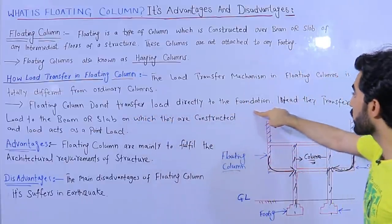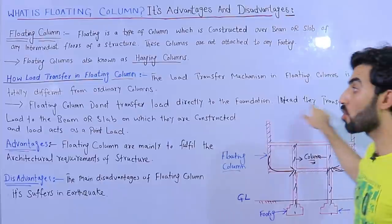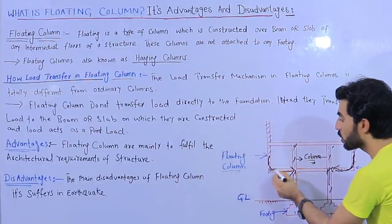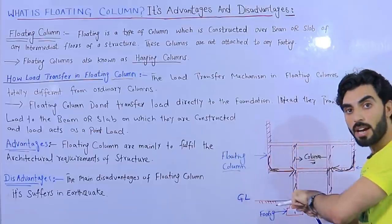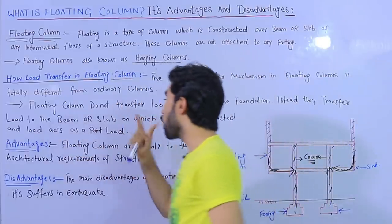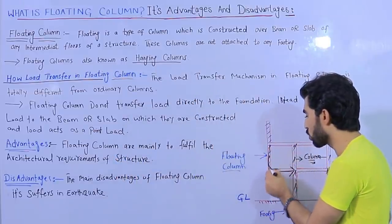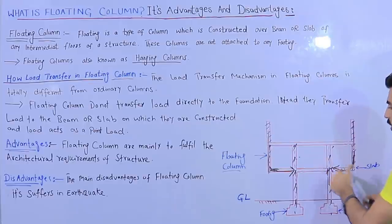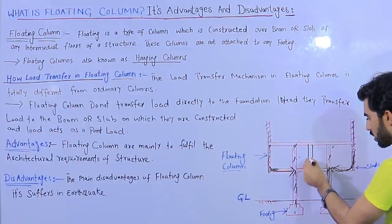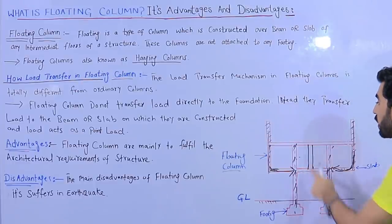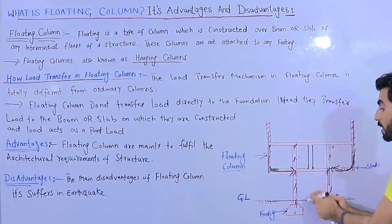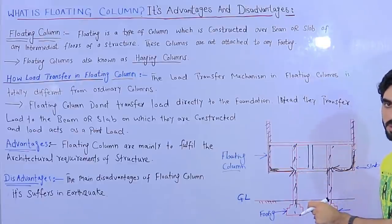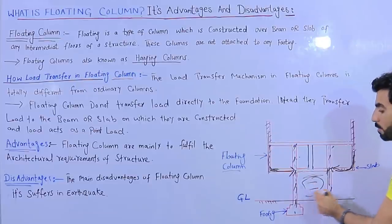The floating column does not transfer the load directly to the foundation. Instead, it transfers the load to the beam or slab on which it is constructed. The floating column acts as a point load on the slab. A floating column can also be constructed on a beam — that is also called a floating column because there is no support underneath and the space below is free.